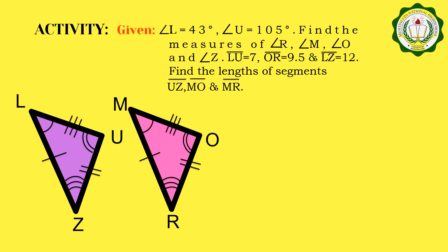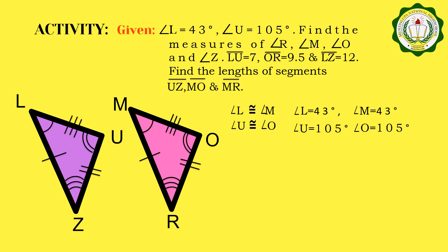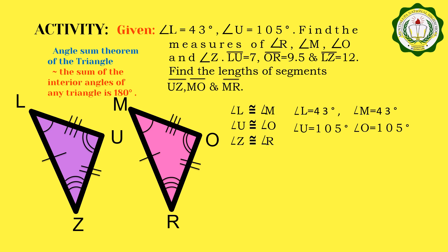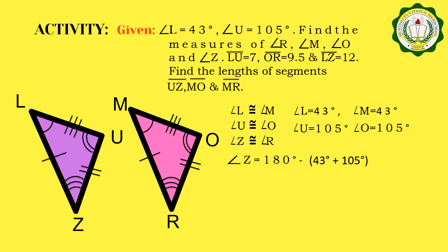To solve this, let us first identify the corresponding congruent angles. We have angle L congruent to angle M. Since angle L is equal to 43 degrees, therefore angle M is also 43 degrees. And then we have angle U congruent to angle O. It is given that angle U is 105 degrees, therefore angle O is 105 degrees. For angle C — we only know that angle C is congruent to angle R, and neither angle has a given measure. So, we will solve for angle C by applying the angle sum theorem, which states that the sum of the interior angles of any triangle is equal to 180 degrees. Therefore, the measure of angle C is equal to 180 minus the quantity 43 degrees plus 105 degrees.